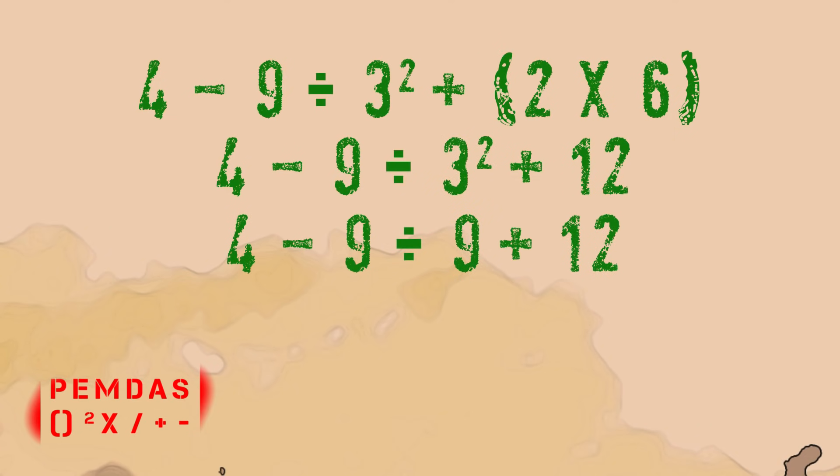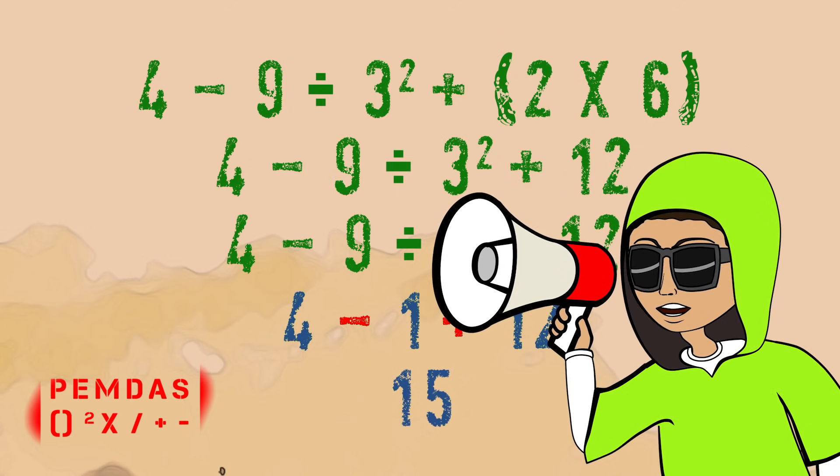Now we divide or multiply. Let's see what we got. Take a look at the signs. 9 divided by 9 is 1. The answer's close, man, we're almost done. 4 minus 1 has a difference of 3. When we add the 12, we get 15!